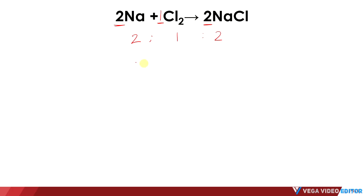So what if I have 4 Na's? How many Cl₂ do I need? From the original ratio, it's obvious that the amount of Cl₂ is half of the Na's. So if I have 4 Na's, then I need 2 Cl₂, and that can produce 4 NaCl.